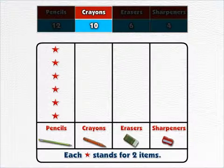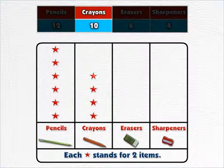How many crayons does Rita have? Ten. Okay, so for crayons, we put one, two, three, four, five, five stars.